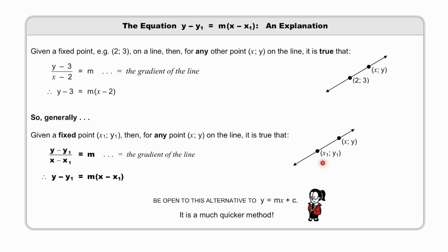Now we realize that, given a fixed point x1, y1, then, for any general point on the line, it will be true that y minus y1 over x minus x1 equals the gradient, and that multiplying by that denominator would give us this form of the equation. Note that we use subscripts for fixed points, and no subscripts for general points. Be open to this elegant alternative to y equals mx plus c. It is a much quicker method.